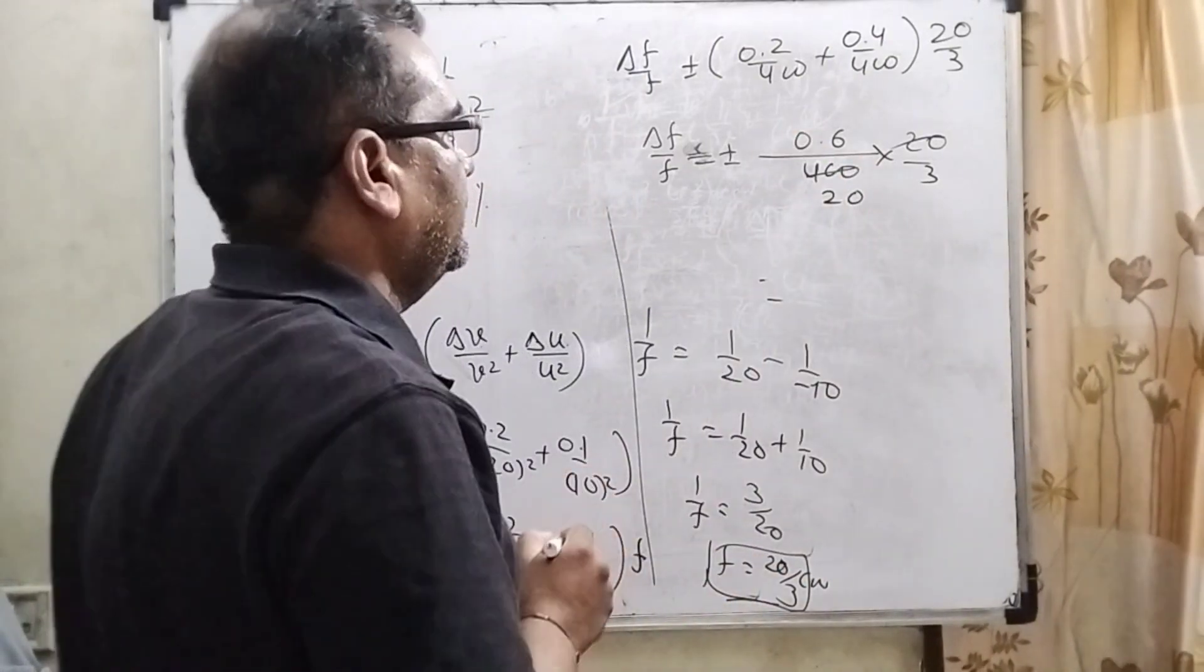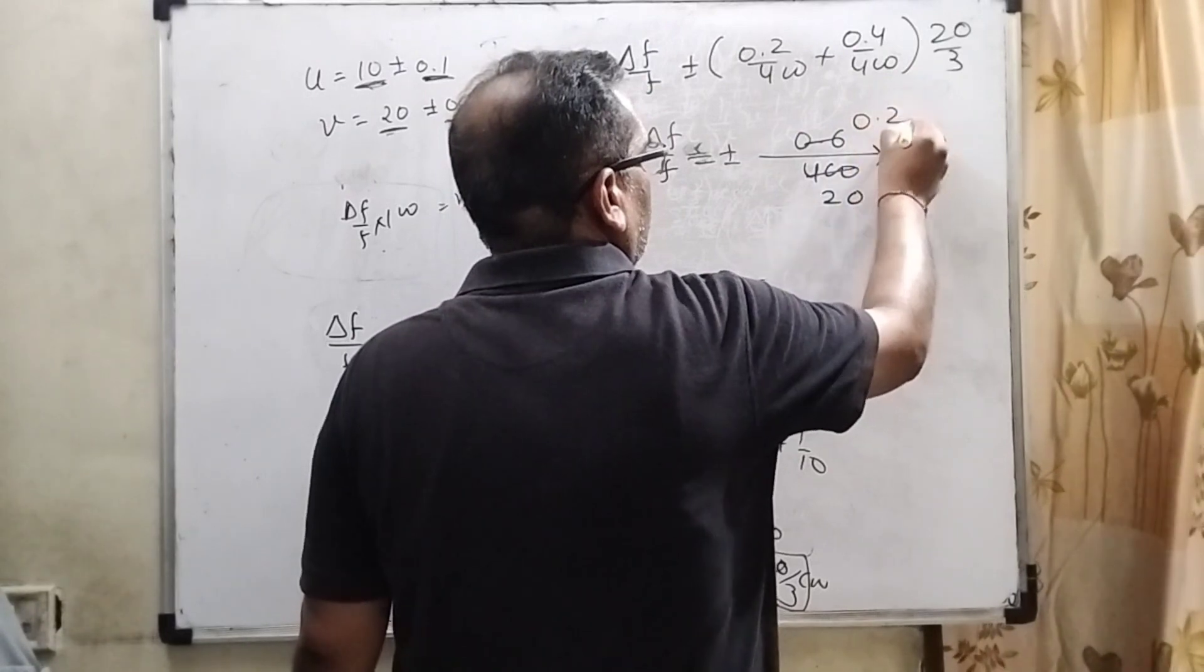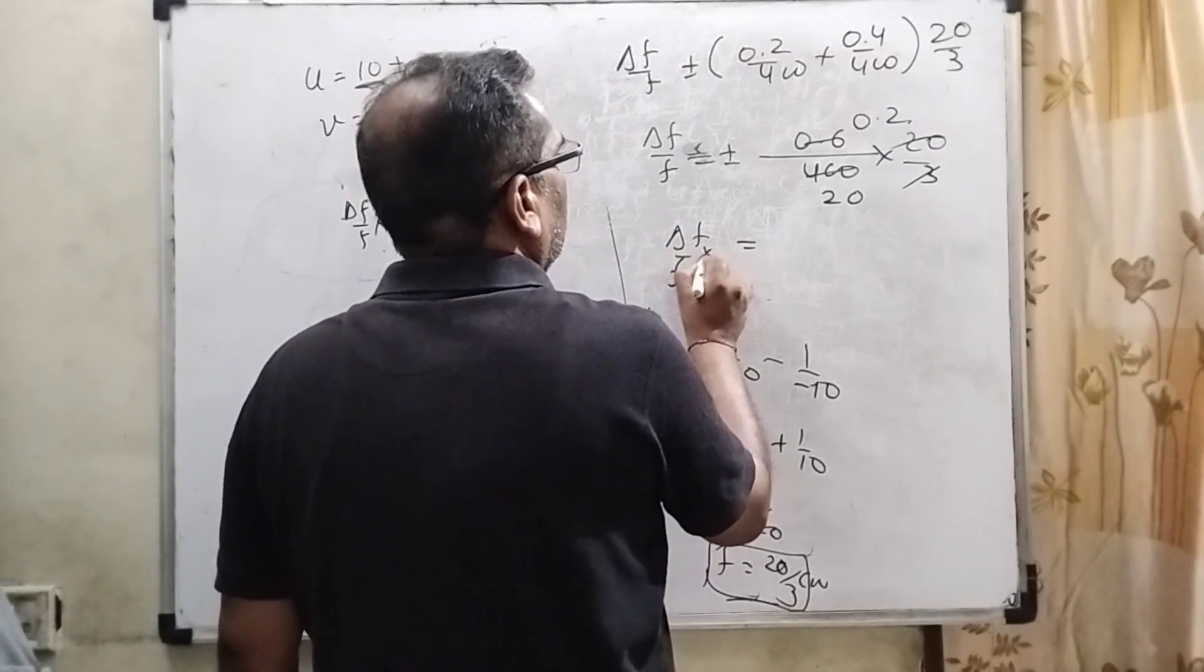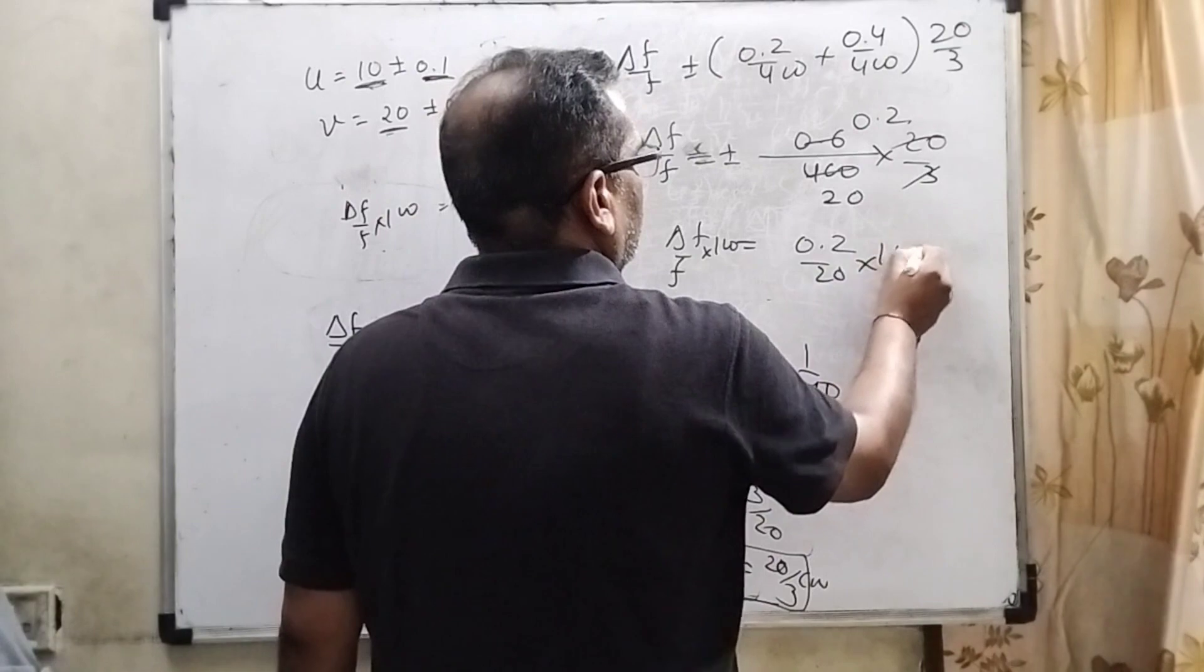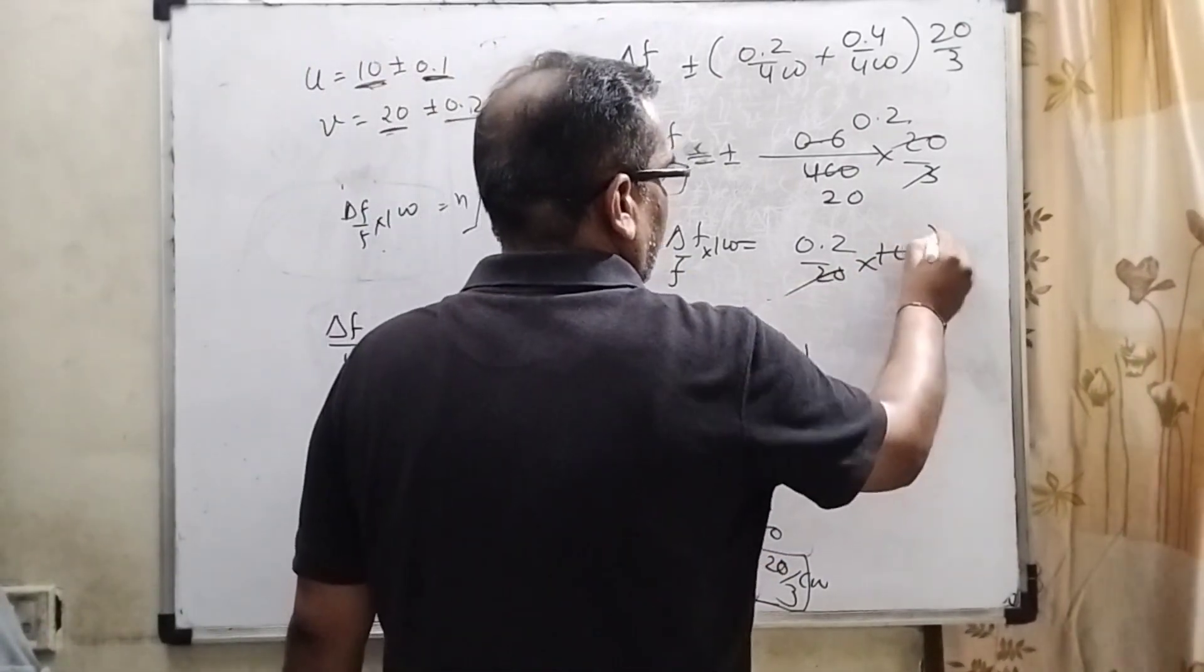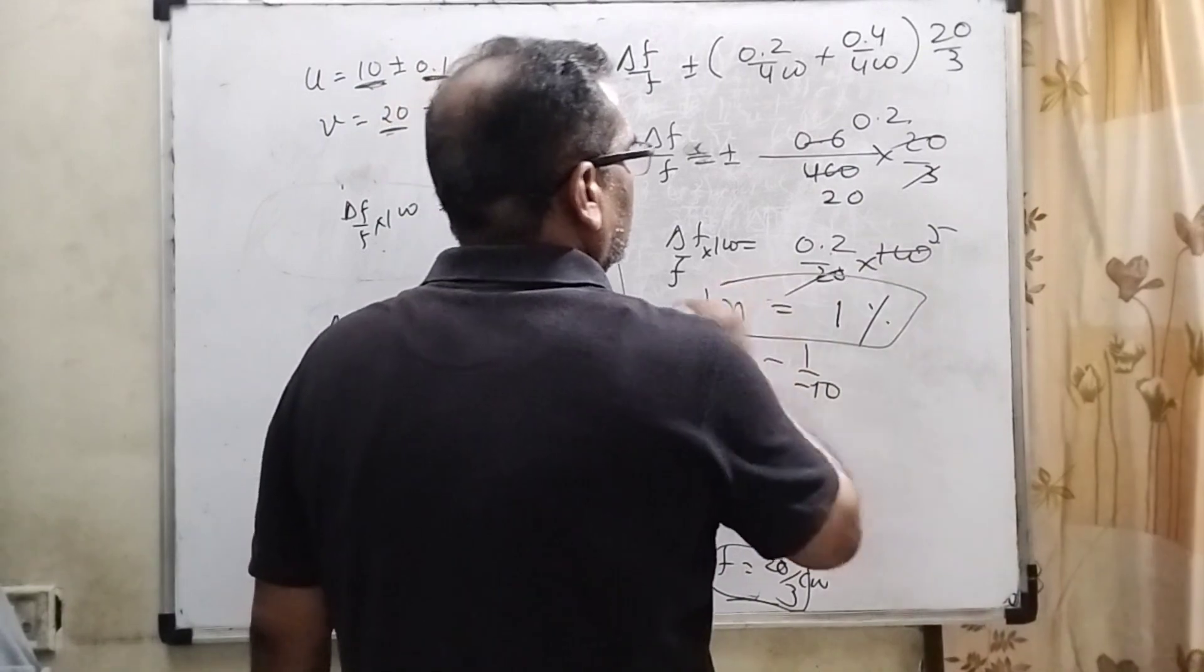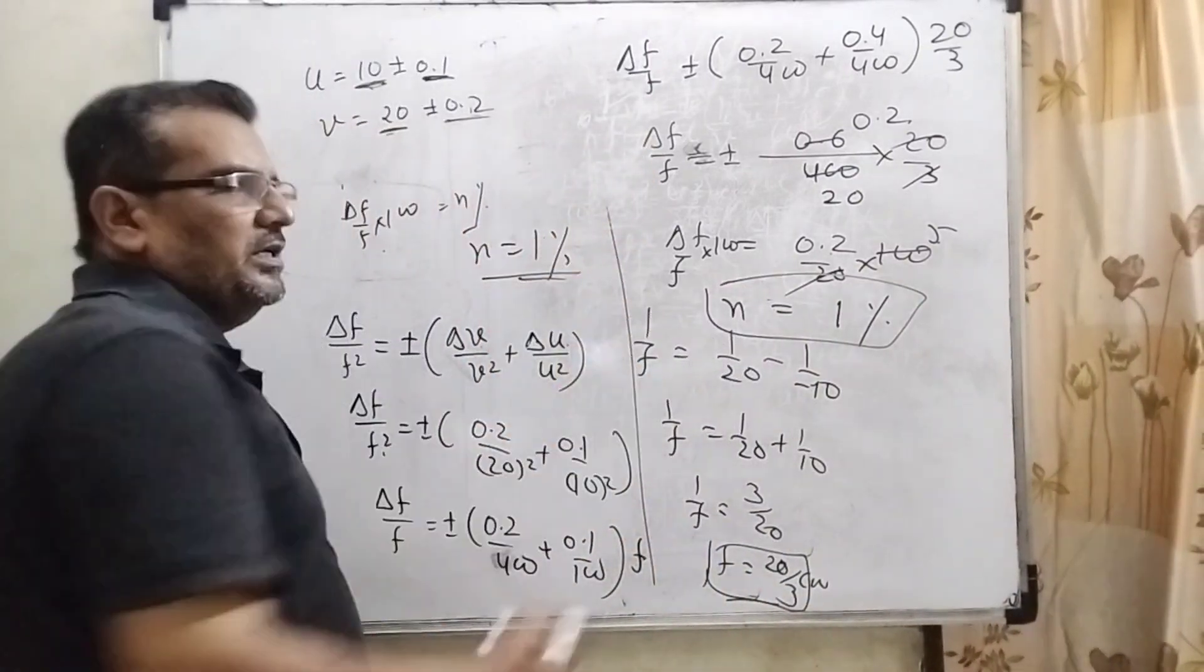Δf/f = ±0.6/400 × 20/3. This equals 20 × 0.2. Multiply by 100 both sides to get n percent. This gives 1/25 = 1%. Here n = 1%. The correct answer is 1%.